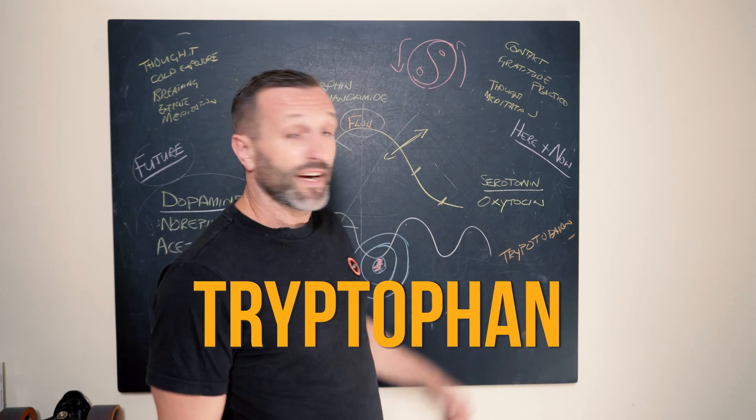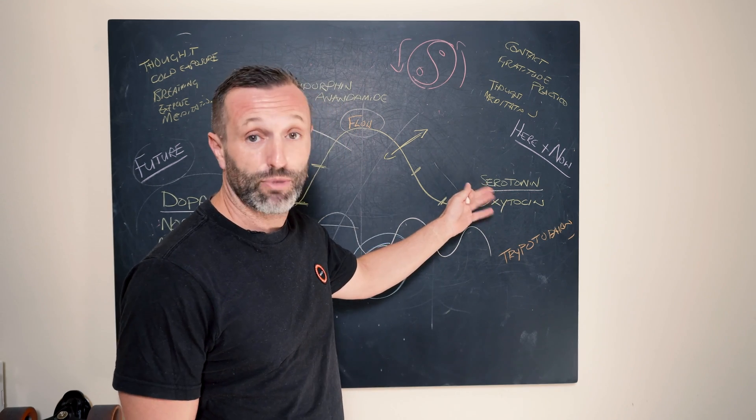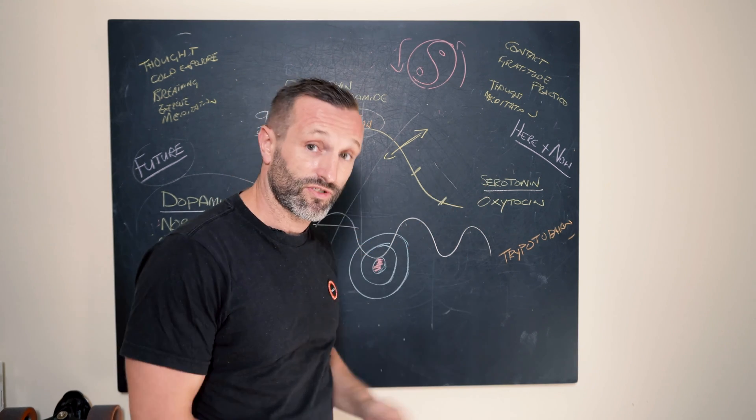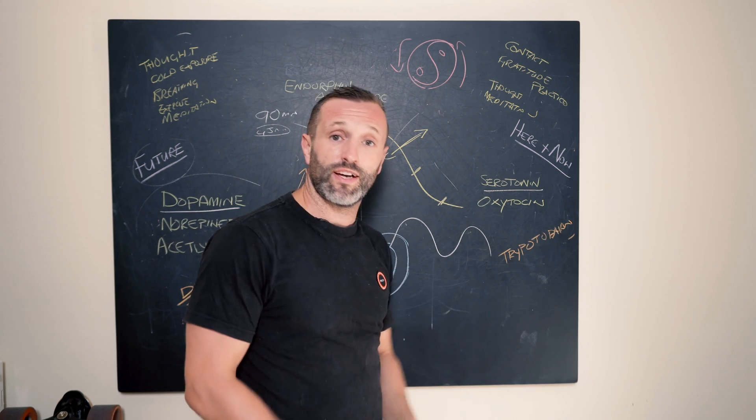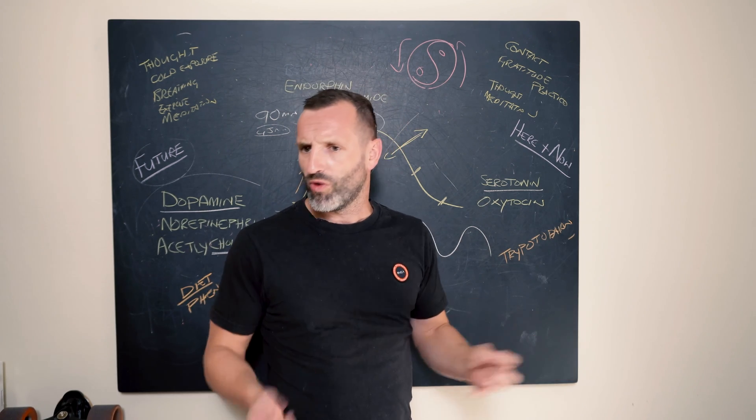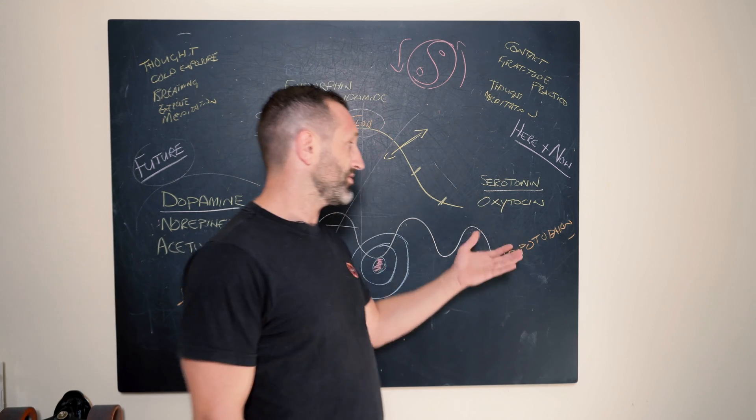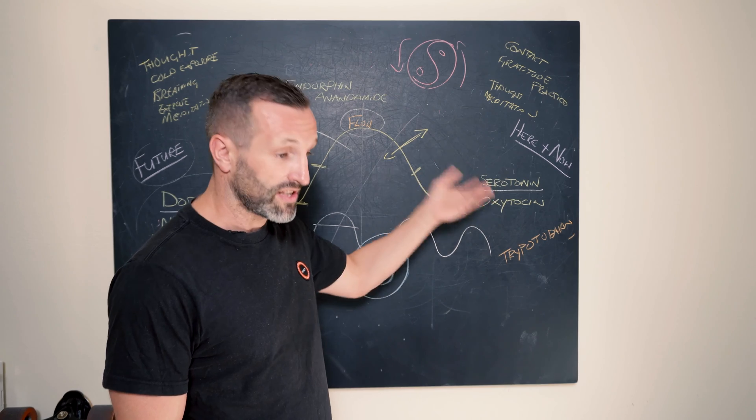Tryptophan. Tryptophan foods also will help with the building blocks for serotonin and oxytocin. So foods with tryptophan, turkey, meats, nuts, tofu as well, eggs, all these things are great sources of tryptophan, which will help replenish these as well.